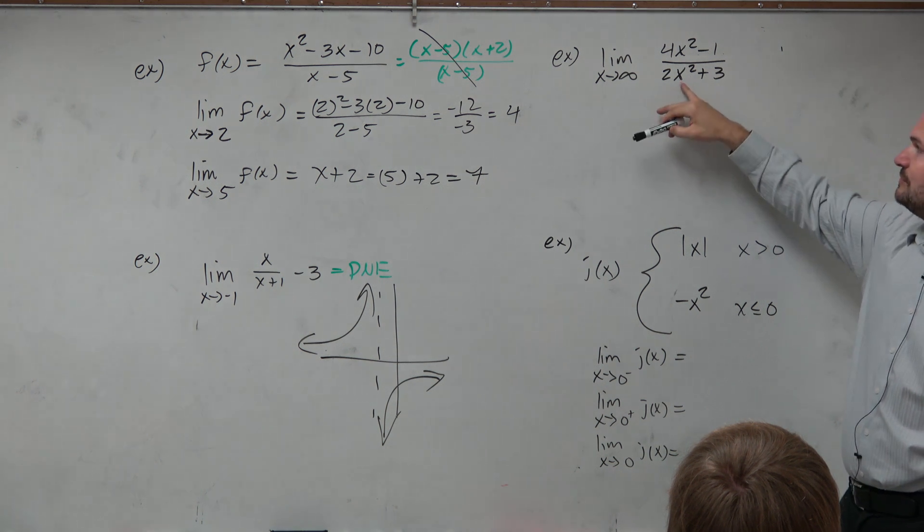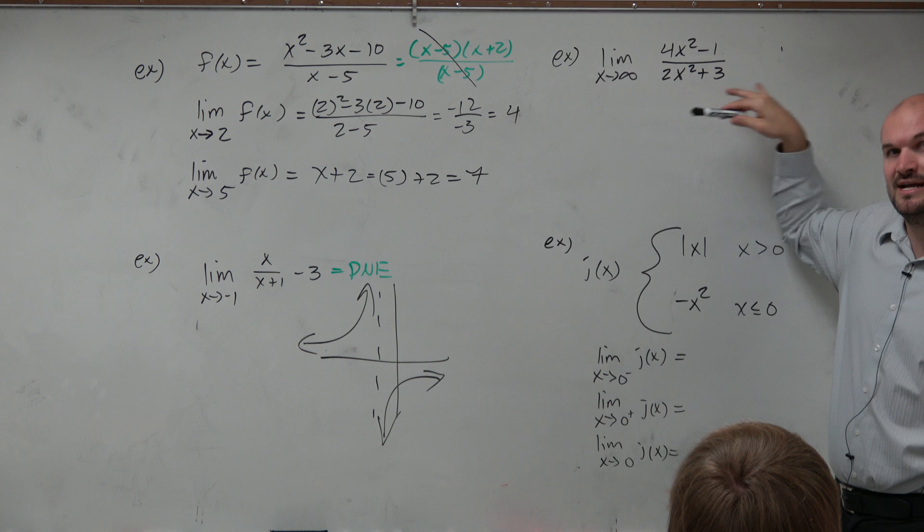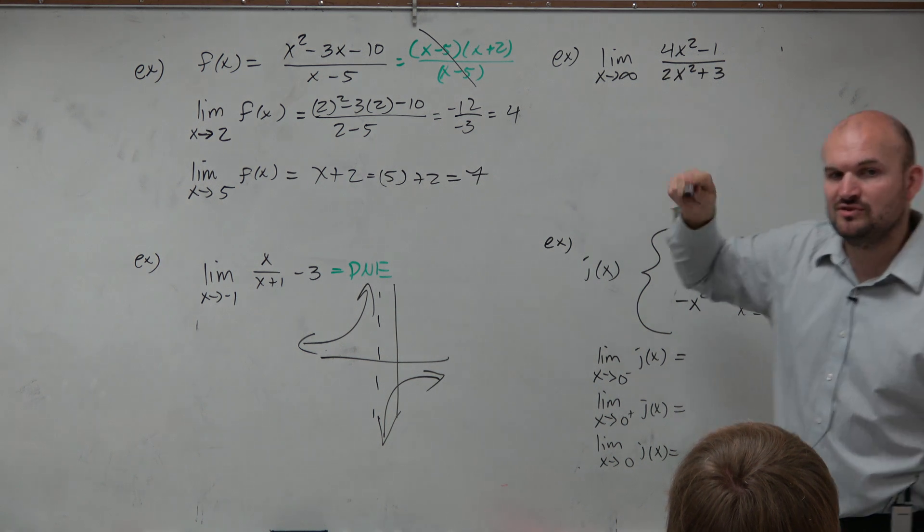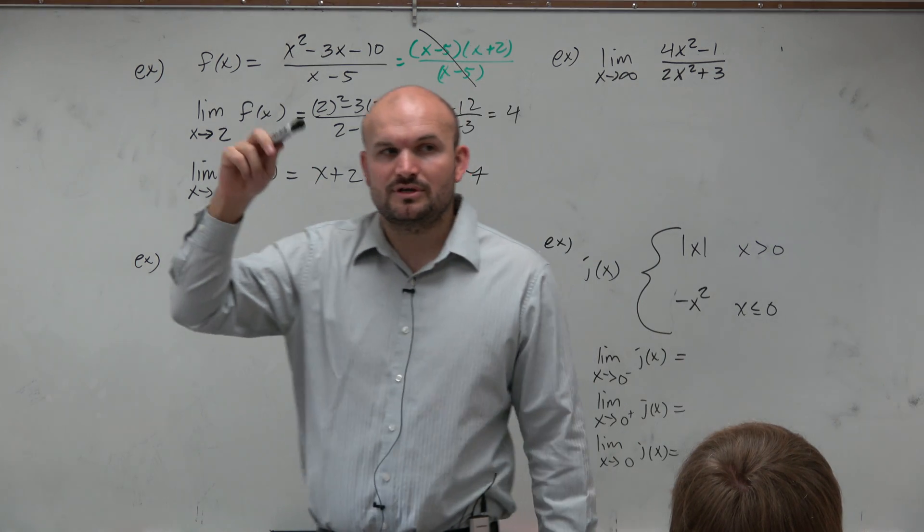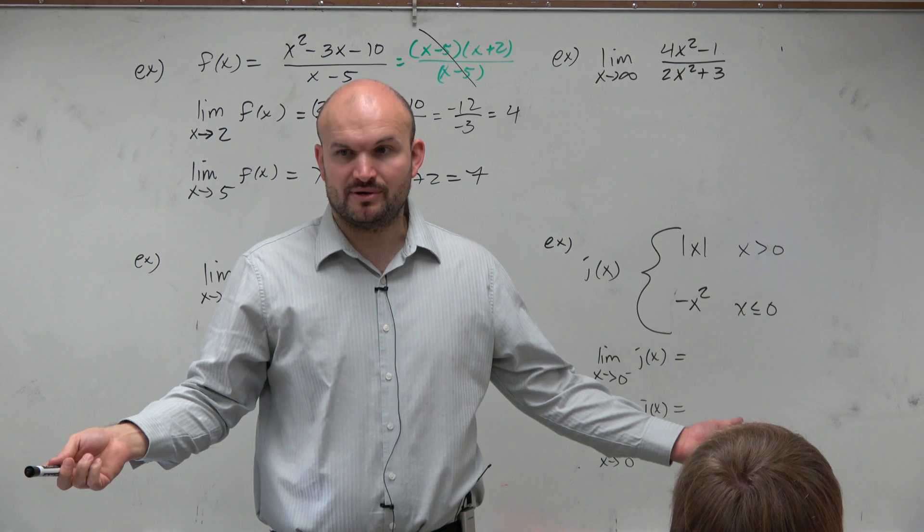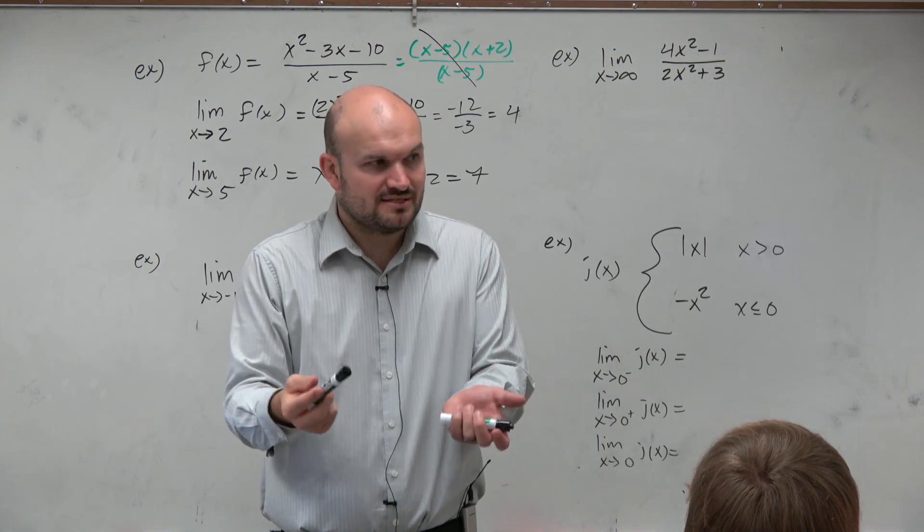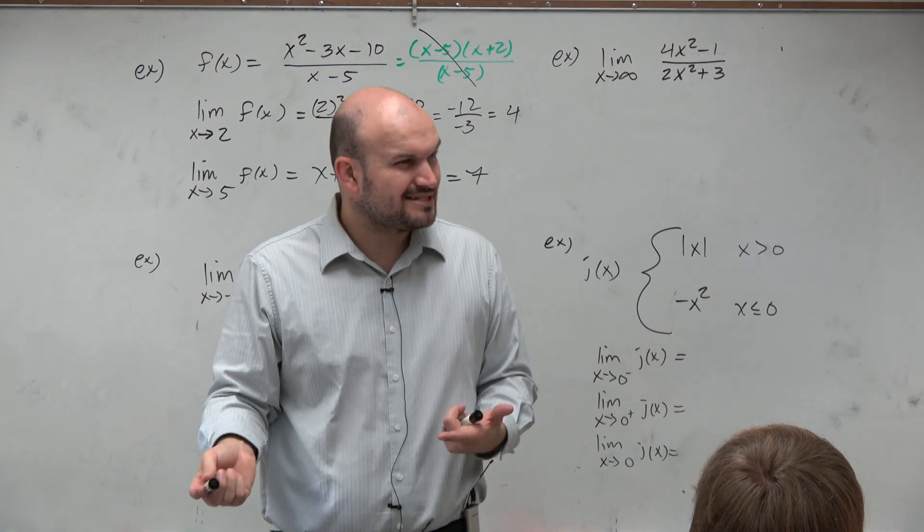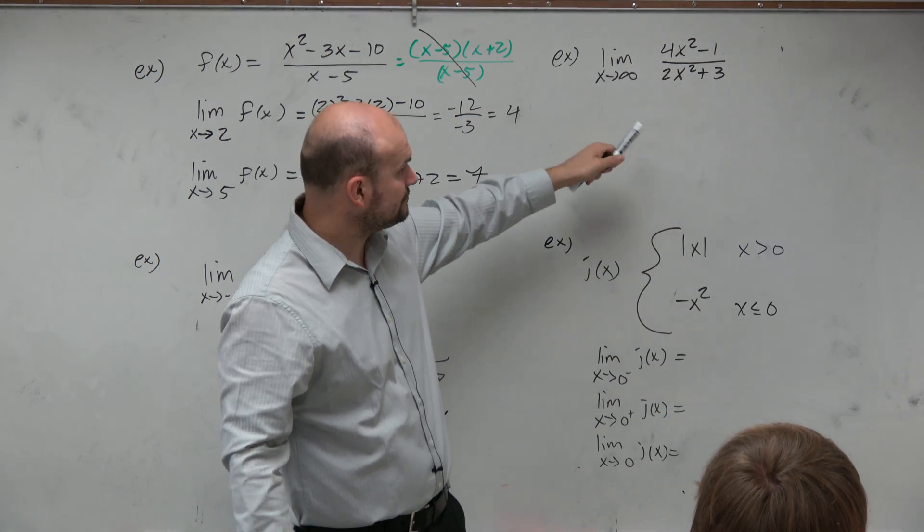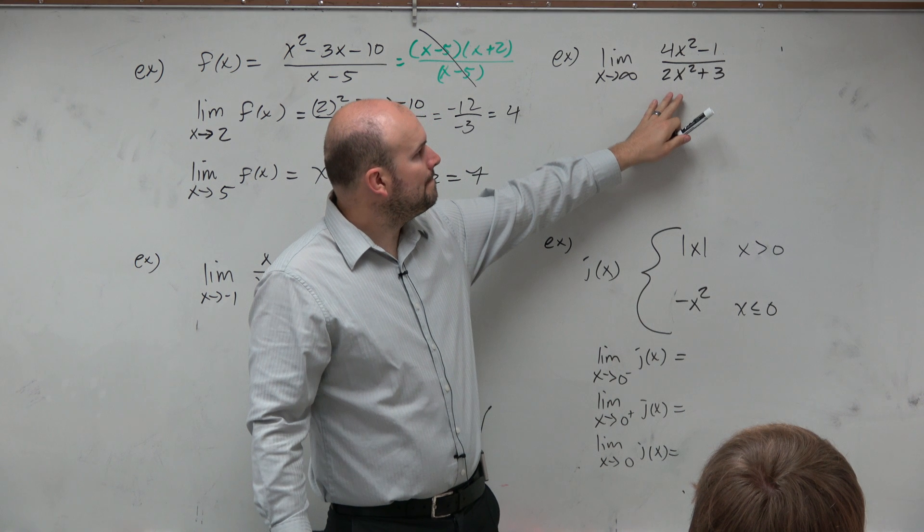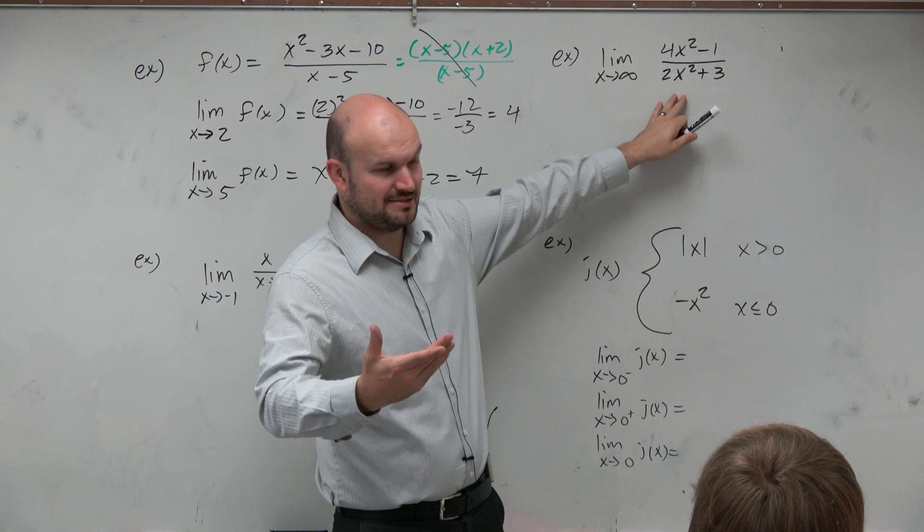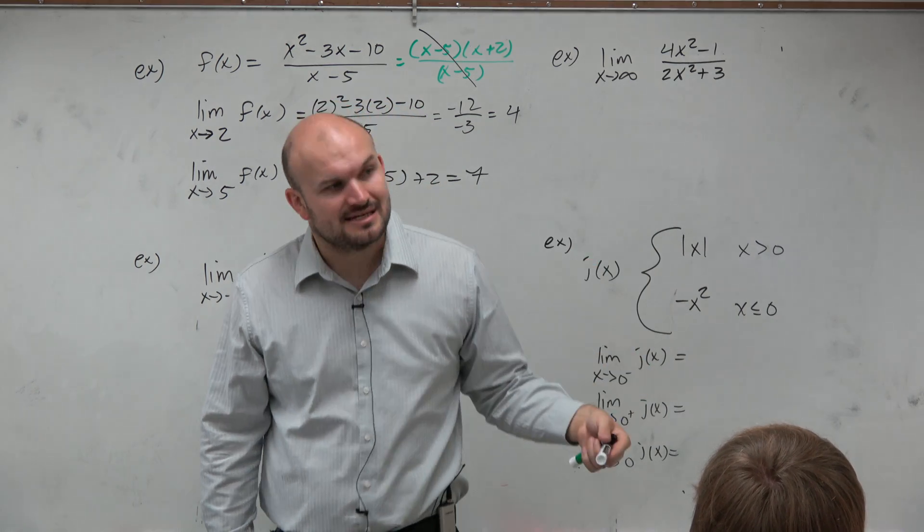If you set 2x squared plus 3, you're going to minus 3 to the other side. You're going to divide by 2. So you're going to have x squared equals negative 3 halves. Well, if you square root both sides, which would be next, you're taking the square root of a negative number. So you're going to have complex vertical asymptotes. Basically means, in your real number system, you're not going to have real asymptotes. So there is no vertical asymptotes here, or at least no real vertical asymptotes.